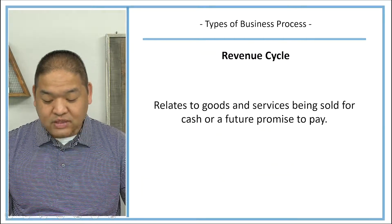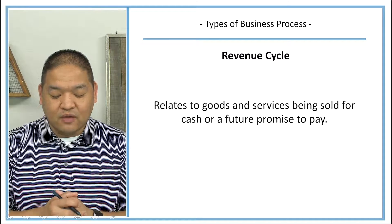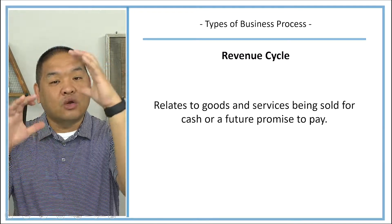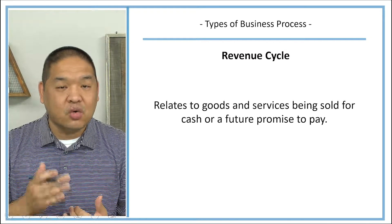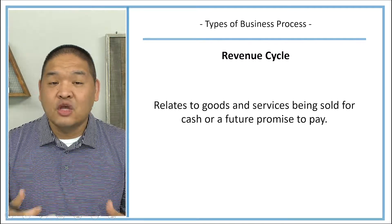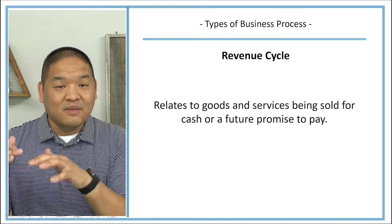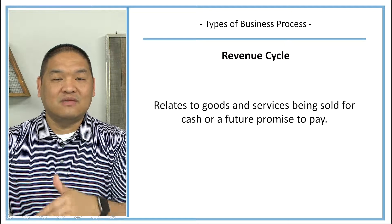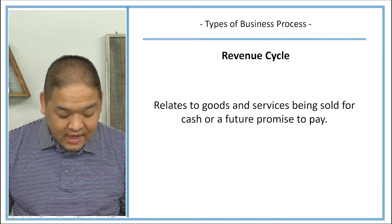The revenue cycle relates to goods or services being sold for cash or a future promise to pay. These are all the activities needed to accomplish this intermediate goal. Our goal is to sell product to our customers and collect cash to generate a profit. The activities associated with achieving that goal are what we call the revenue cycle.